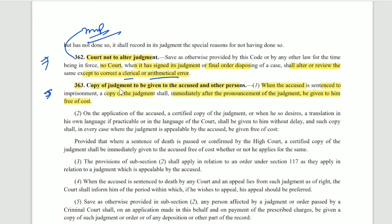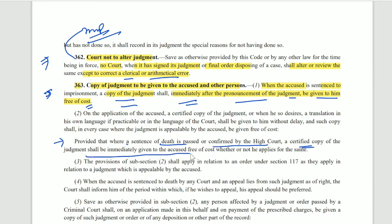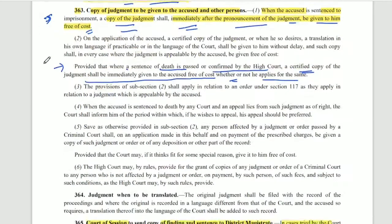Section 363 says that if any judgment is pronounced, the accused person and other related persons shall be given a copy of the judgment immediately after the pronouncement, free of cost. This is a direct question — whether it should be given immediately free of cost and under which section. Where a sentence of death is passed and confirmed by the High Court, a certified copy of the judgment shall be immediately given to the accused free of cost, whether or not he has applied for the same. The Court of Session passes the death sentence, but it is not executed until the High Court confirms it.